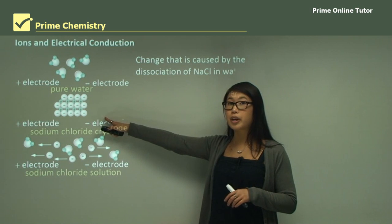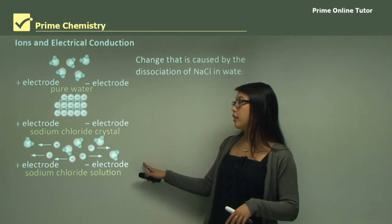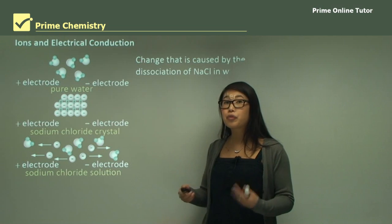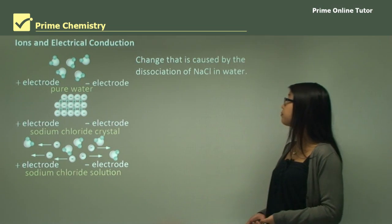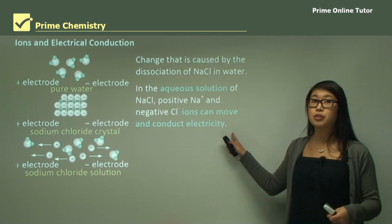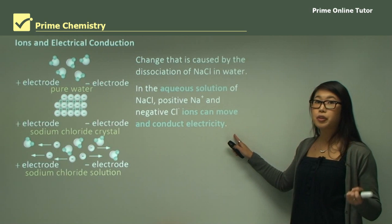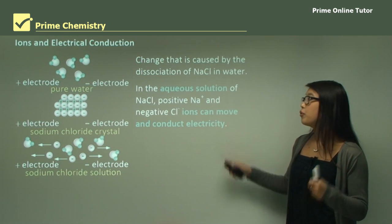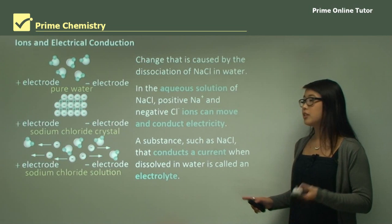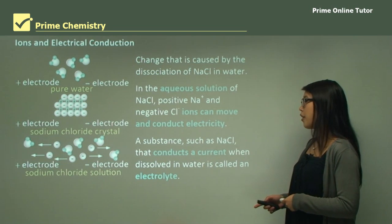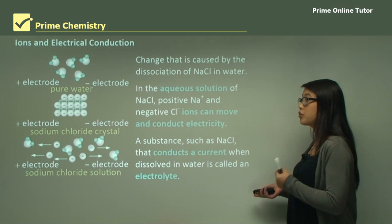The ions disperse into the water, and when electrodes are placed in the solution the ions can move through the water towards the electrodes, providing a current. In an aqueous solution of sodium chloride, the positive sodium and the negative chloride ions can move and conduct electricity.